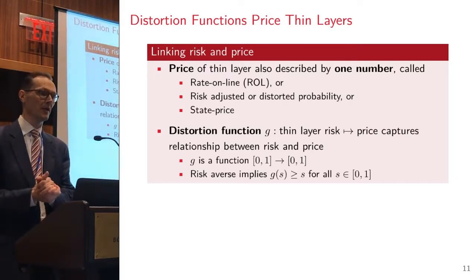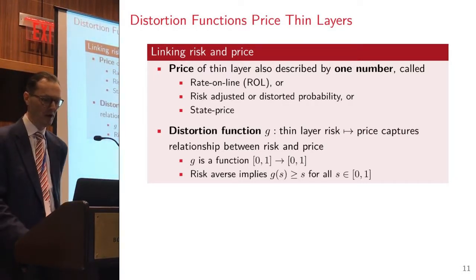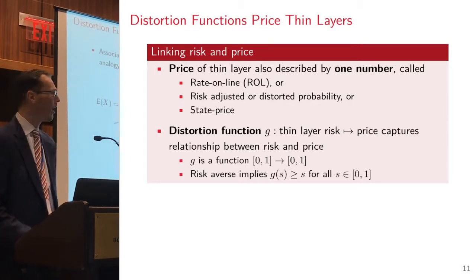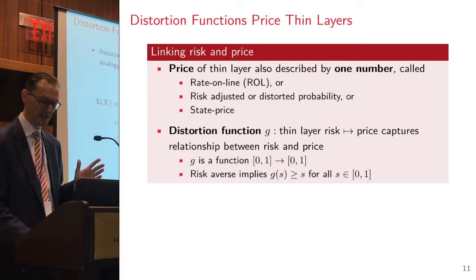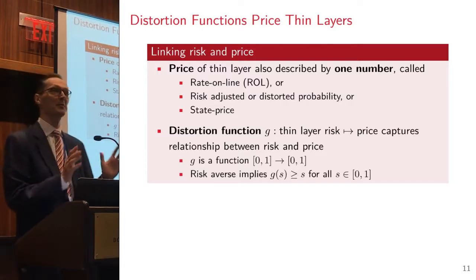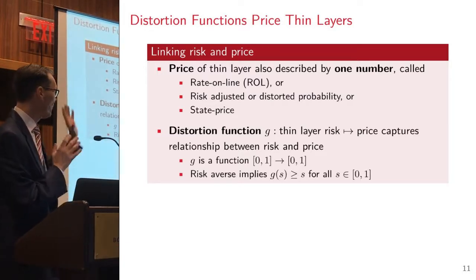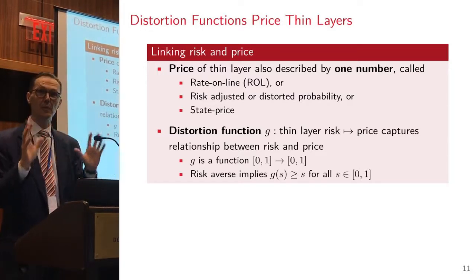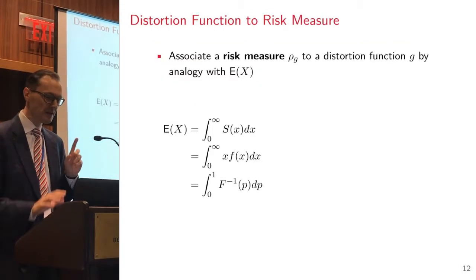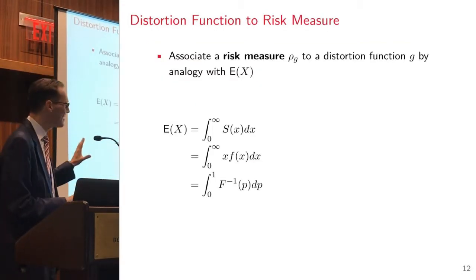The distortion function is going to map me from the probability my little layer attaches and it's going to give me the price. So it's going to be a function from the probability that my layer attaches, which is a number between zero and one, and my price has to also be a number between zero and one. No one's going to pay more than a dollar for cover that only recovers a dollar.